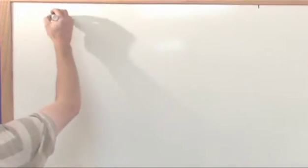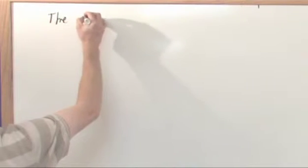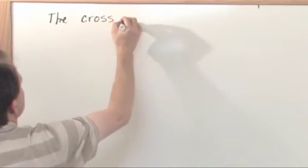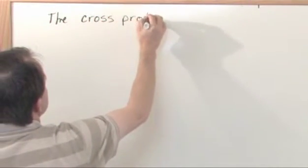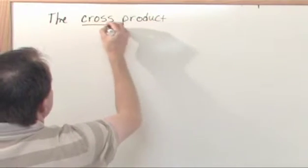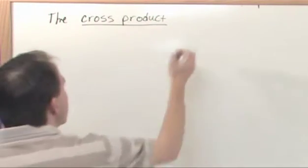So what we will say, just to write it down, is the cross product, I'm going to underline it because it's a term here, of two vectors.